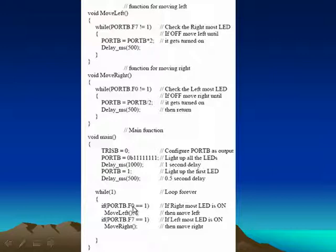If port B is set to one — if the rightmost LED is turned on — then move left. If the leftmost LED is turned on, then move right. Move left means it is calling the procedure — calling the function MoveLeft. Similarly for MoveRight. This while loop is infinitely happening.